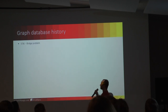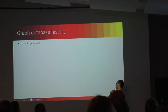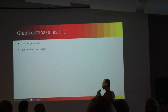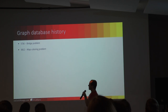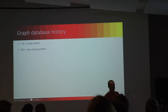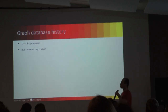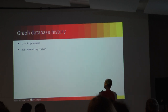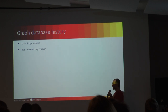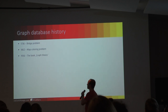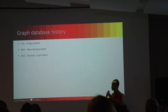Now let's look at how the history of graph databases developed. We begin with a problem — the bridge problem. Next we have the graph coloring problem, which is quite strongly correlated with the history of computing, and we will get back to that. If we are talking about math, we should have a book — so in 1936 we have the book Graph Theory, and now we can start talking about graphs in math.